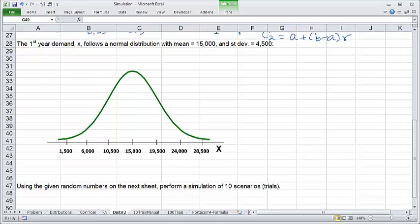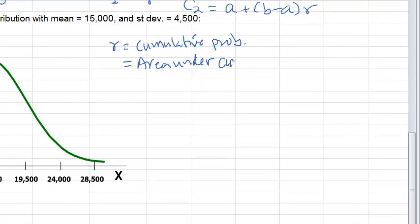The third variable, the first-year demand, we're told follows a normal distribution with mean of 15,000 and standard deviation of 4,500, as we can see here. Here, the random number from Excel is a cumulative probability. That is, r is the cumulative probability. So r is the area under the curve of your distribution. That is, probability that x is less than some number. And this number is what we are looking for.